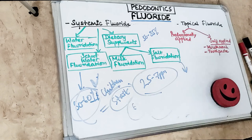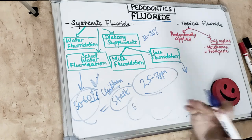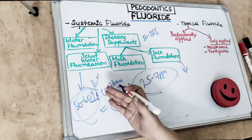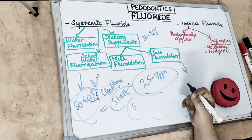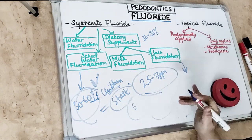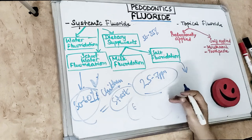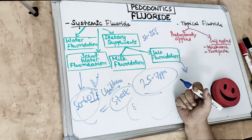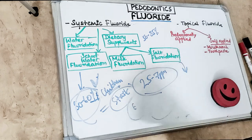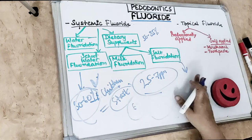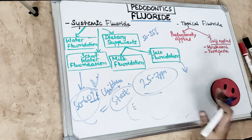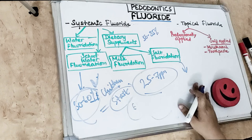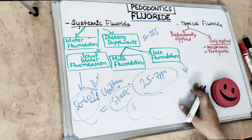Salt fluoridation holds good promise for developing countries like India, where water fluoridation is not feasible due to limited central water supply. Salt is an inexpensive vehicle used in almost all households. Fluoride supplied in salt reduces caries by up to 40%, though absorption when ingested with milk is slower.